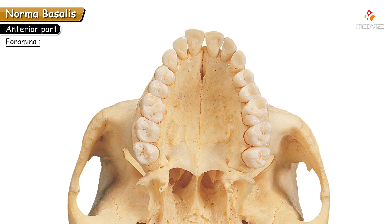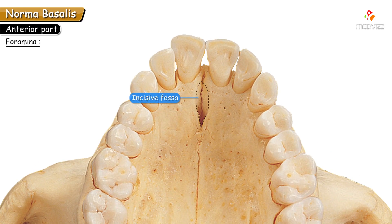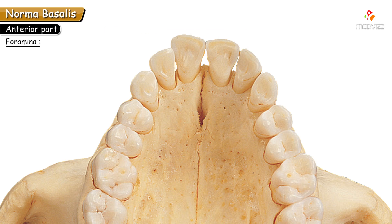The first opening is the incisive fossa. It is a deep depression present just behind the incisor teeth. If you look closely, the incisive fossa contains two openings — the right and left incisive canals — which transmit the nasopalatine nerve and the greater palatine vessels.